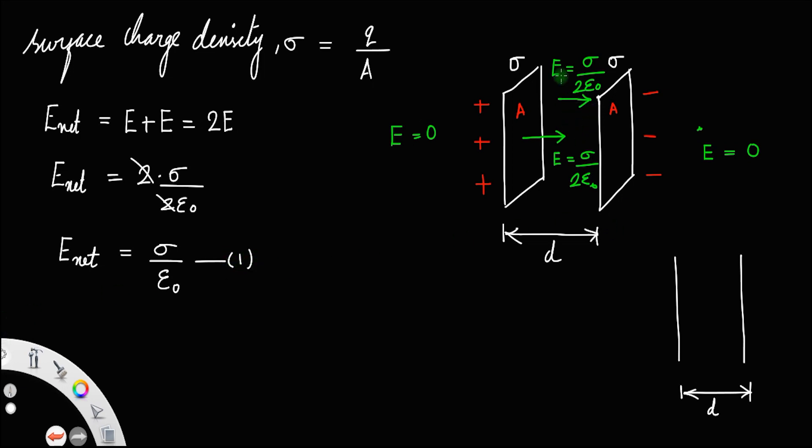Now we need to find the potential difference between these two plates. Potential difference V is equal to, potential difference is related to electric field, that is net electric field times the distance. Potential is equal to electric field times distance. That is equal to V equal to sigma by epsilon 0 times d. Let us call this equation number 2. Let me erase this.